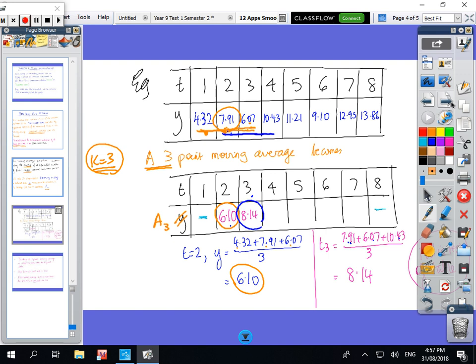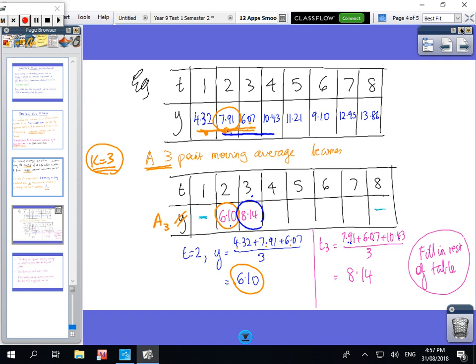What I want you to do is I want you to fill in the rest of the table. The number for four will be centered on four and then we're going to look at the numbers around it. At the end we lose the last number because the number after eight, there's no number there, so you can't center on eight. We're losing a number at the start and the finish. Pause the tape and when you're ready, come back.